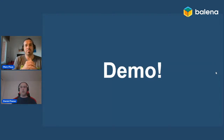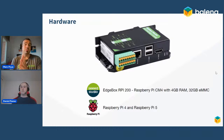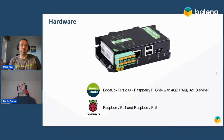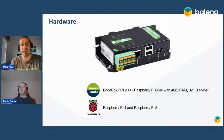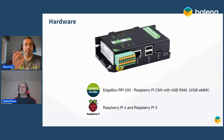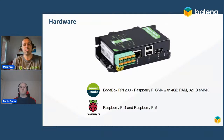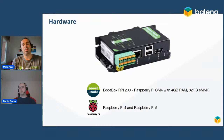Before the demo, let's talk about the hardware we're using. Balena lets you run multiple device types on the same fleet with the same application. In this case we're using at least three different hardware types: the Seeed Studio EdgeBox with Raspberry Pi CM4, which is handy for Modbus data or specific sensors; Raspberry Pi 4; and Raspberry Pi 5, the latest Raspberry Pi in the fleet.